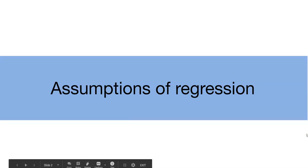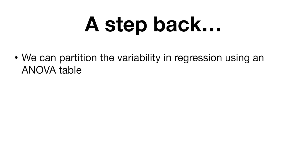Now we'll talk a little bit more about the assumptions of regression. First, let's take a step back. We know that we can partition the variability of a regression using an analysis of variance table. This is really important because it allows us to assess where the variability comes from and how much of it is described with our regression model.